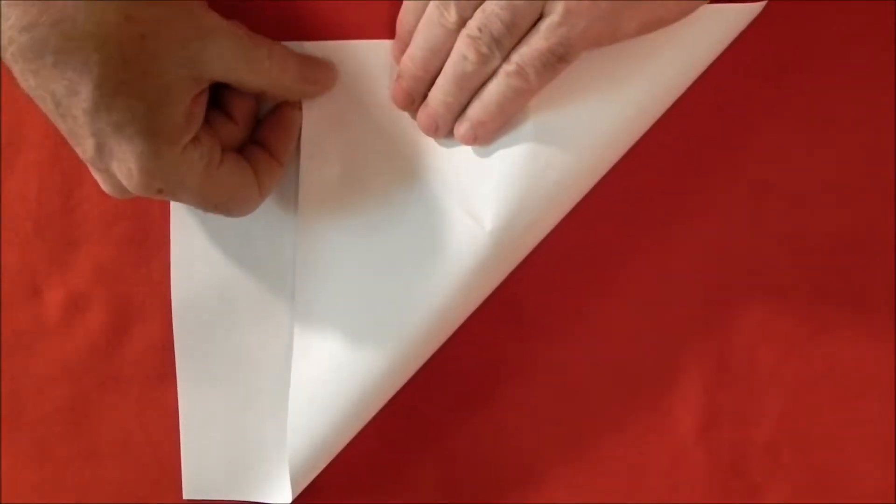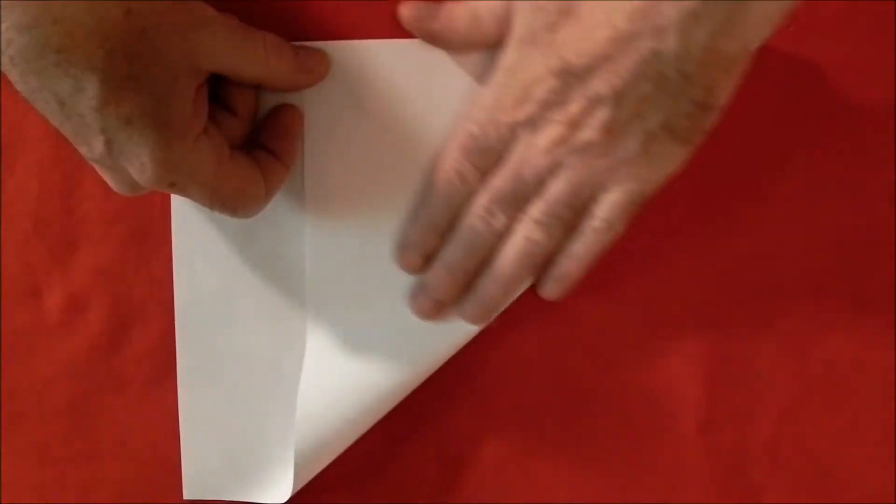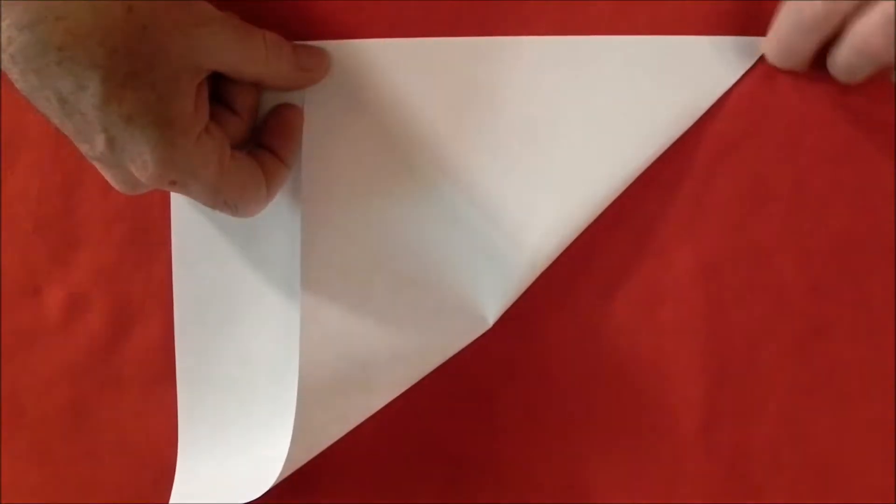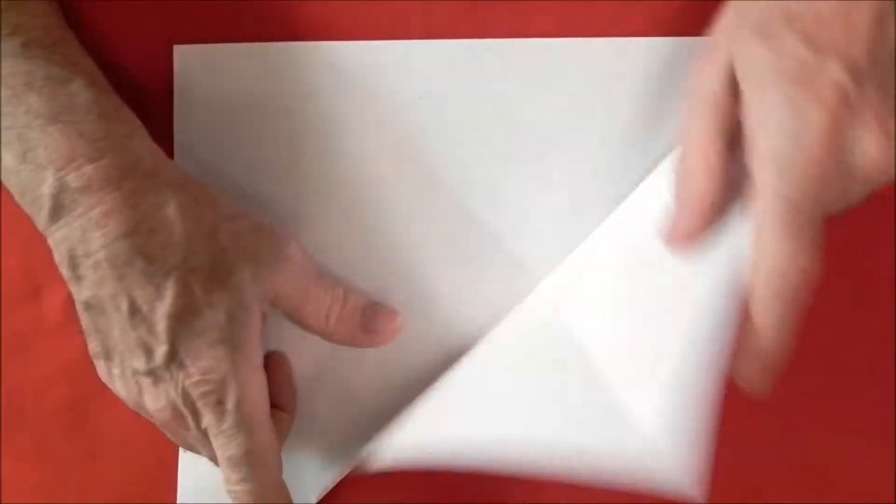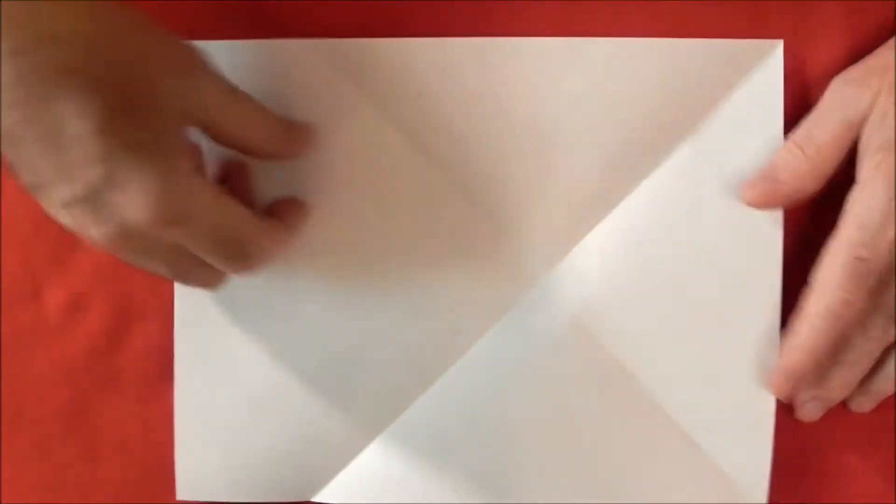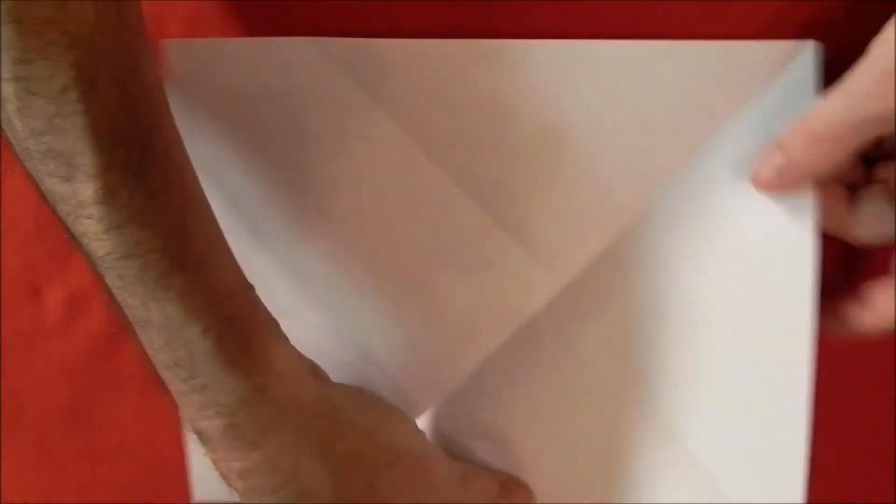And we'll meet the corners together. If we do that, this should line up and that should line up. We've got a perfect square now across. Now we're going to turn this over this way.